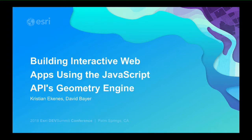By way of introduction, I'm Christian Ekenis, a product engineer on the JavaScript API. The geometry engine hasn't changed much at all in the last couple of years, so I just build apps demoing things for it. My name's Dave Baer, and I also work on the ArcGIS JavaScript API team. I worked on integrating the geometry engine into the API, and as Christian says, it hasn't changed much, but it doesn't make it less cool.